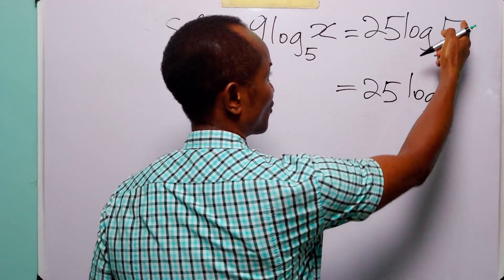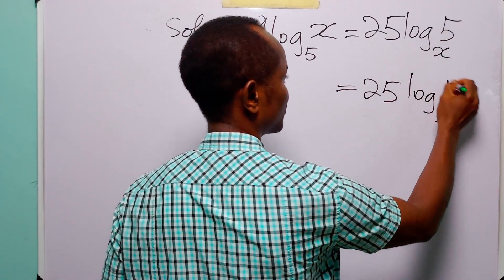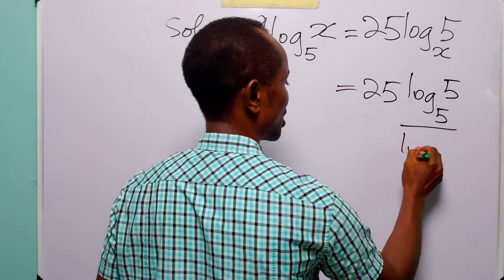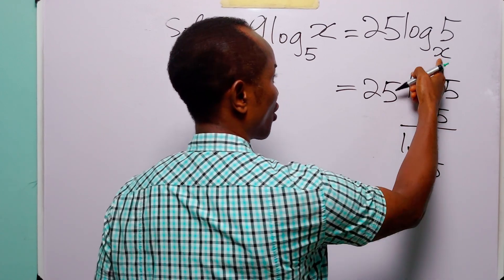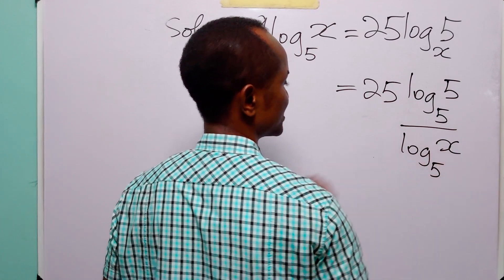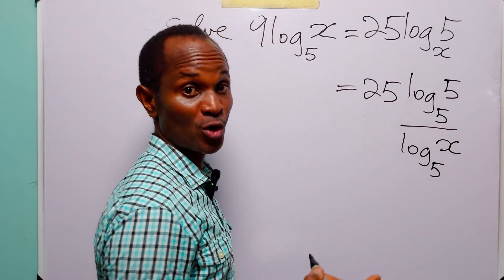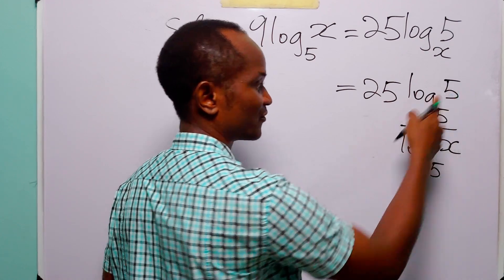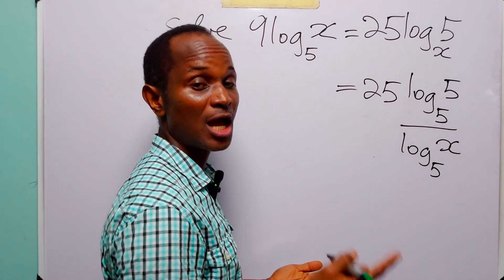...base, which is 5, of 5, divided by log to the new base, which is 5, of the old base, which is x. Now of course you must know that log to base 5 of 5 is equal to 1.